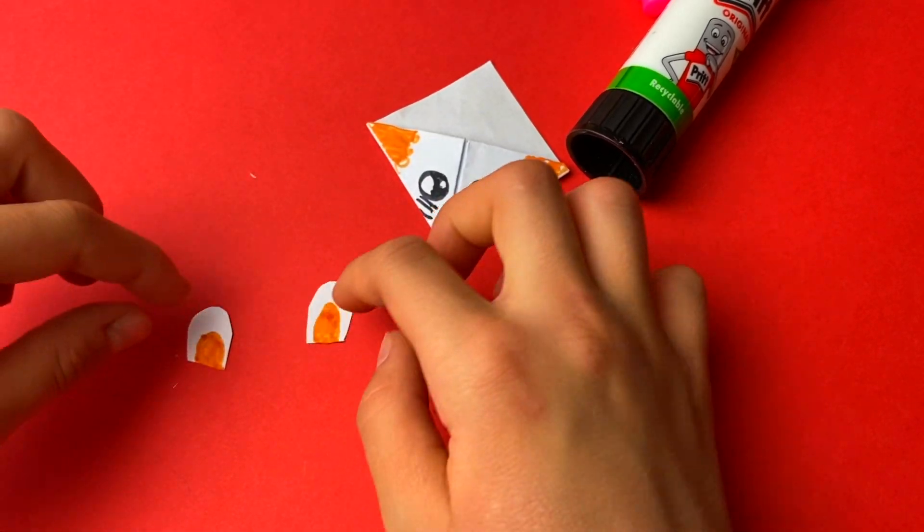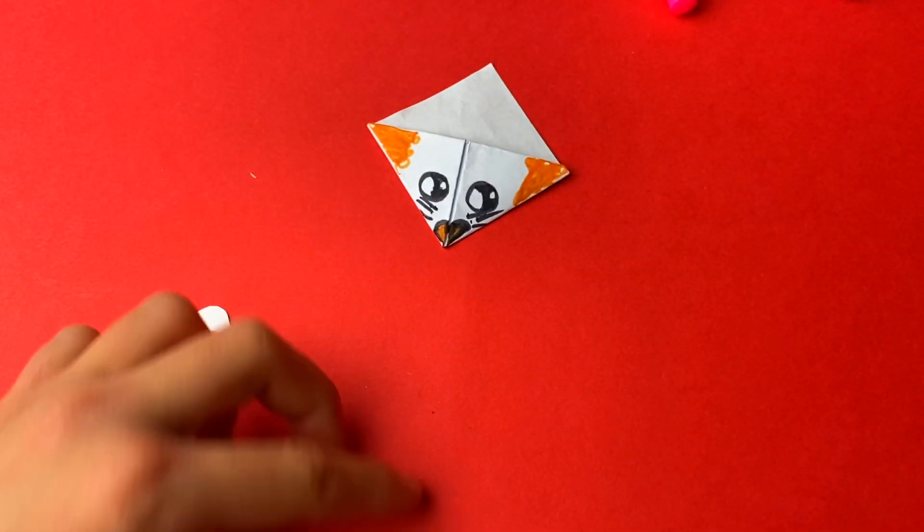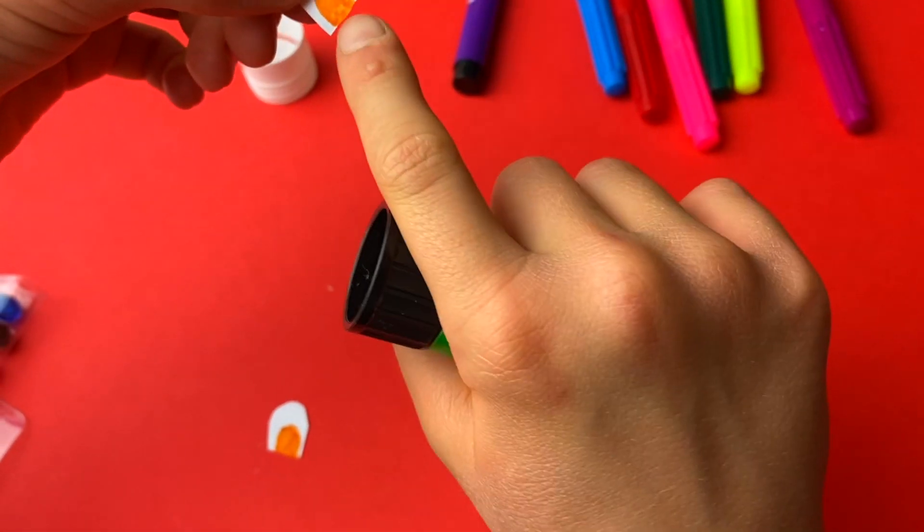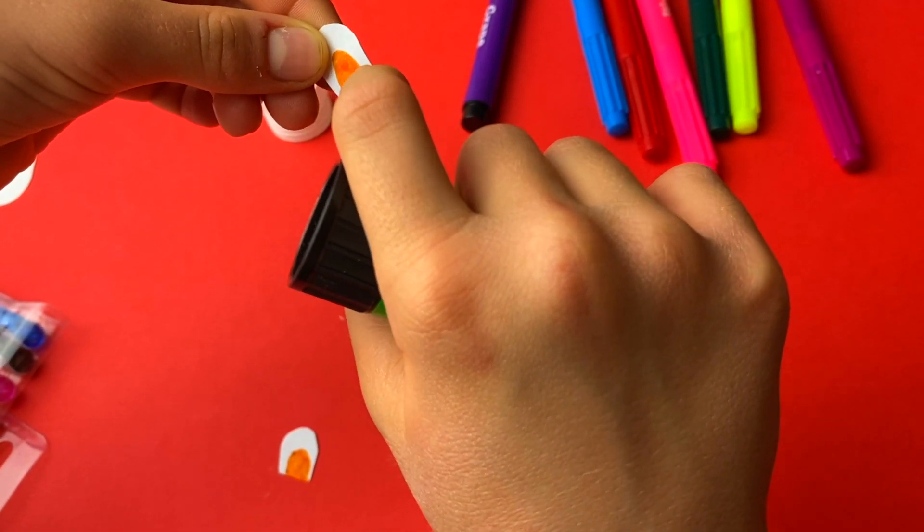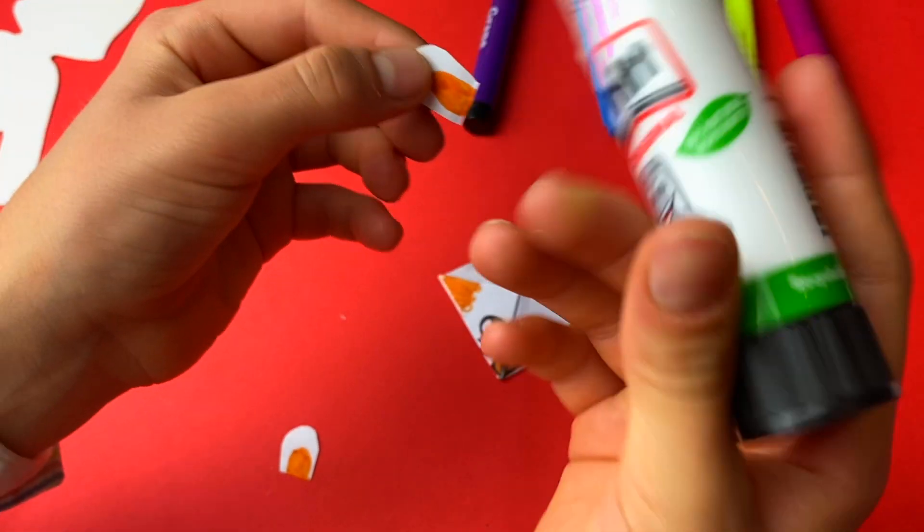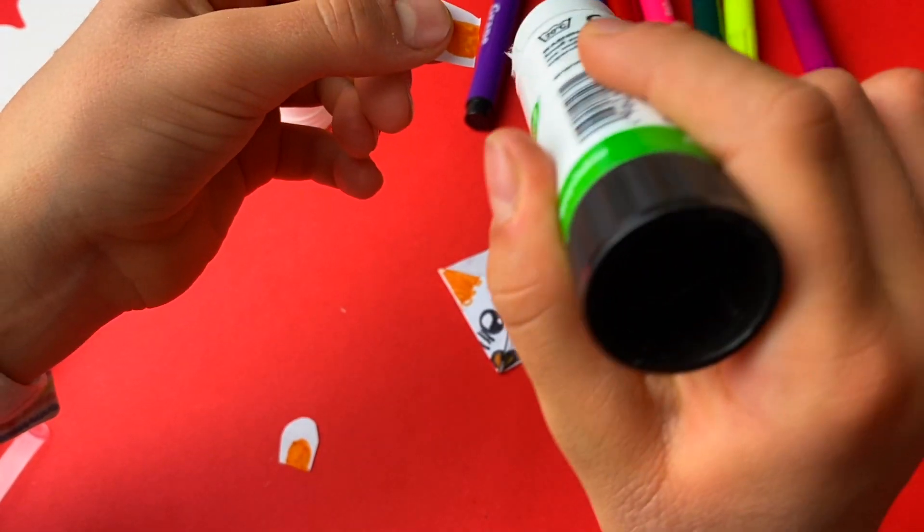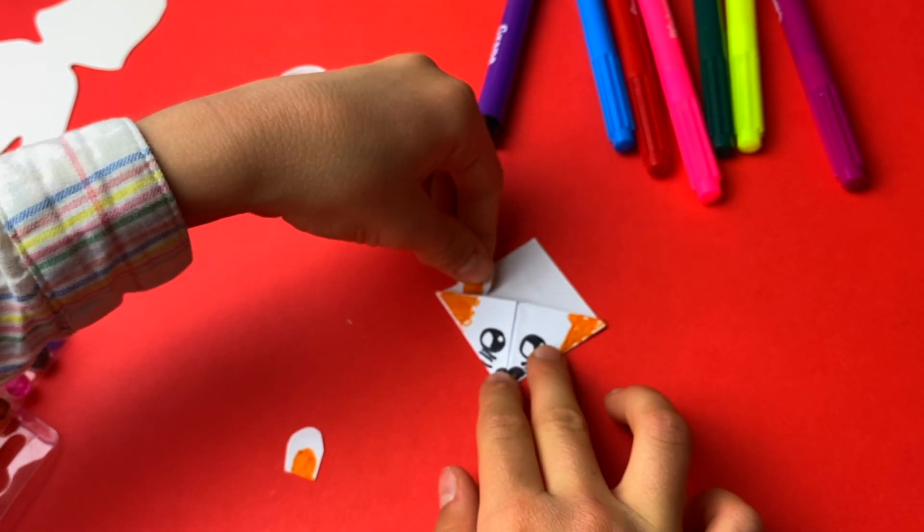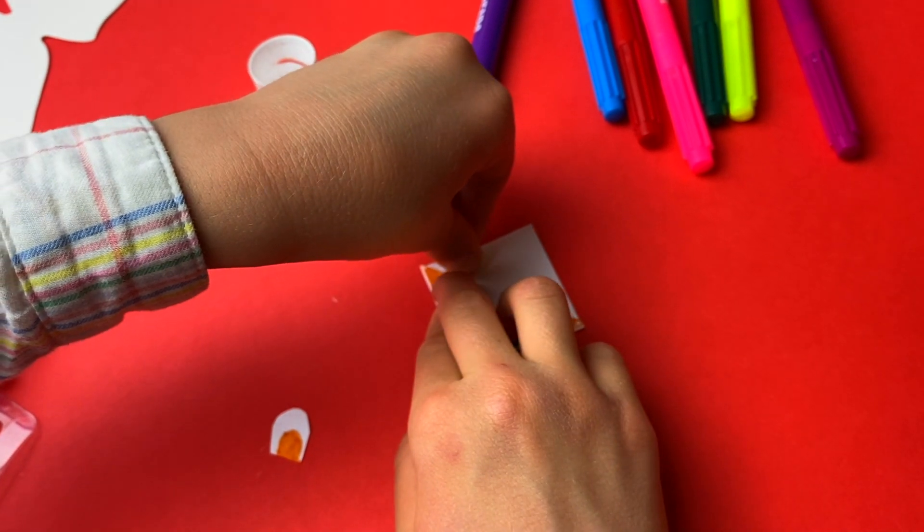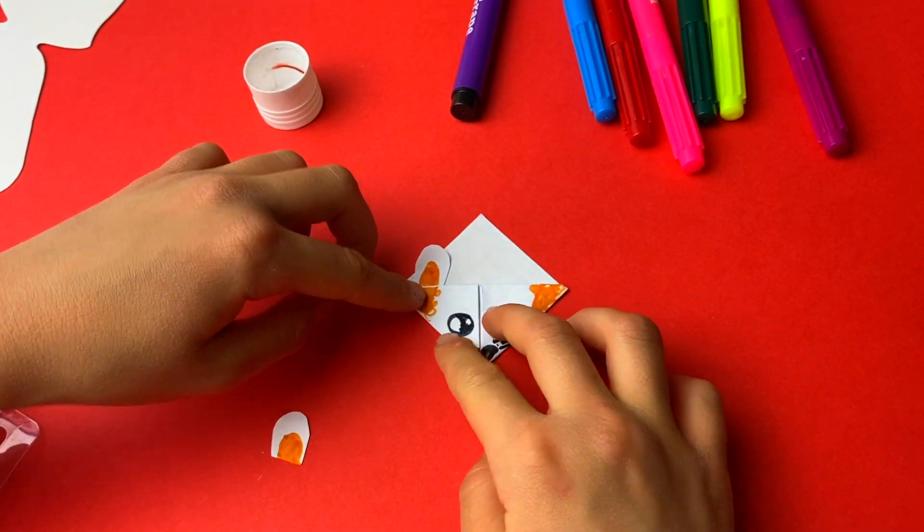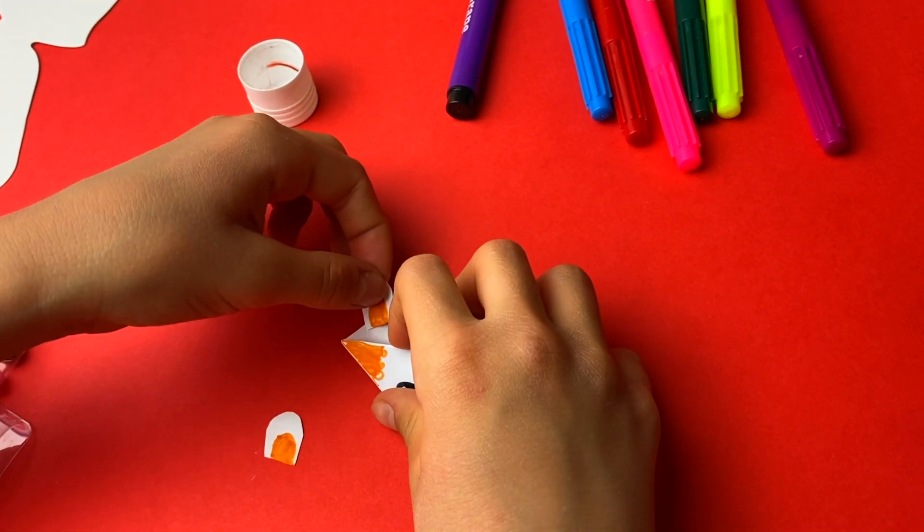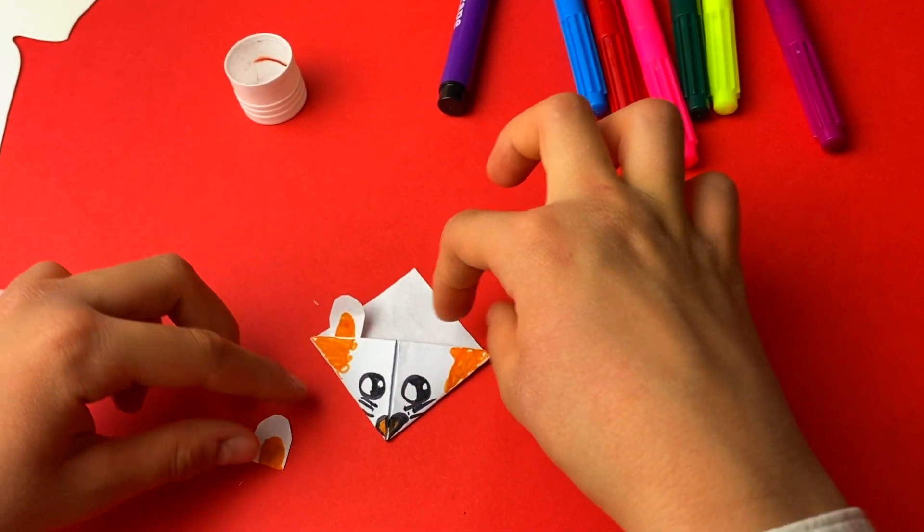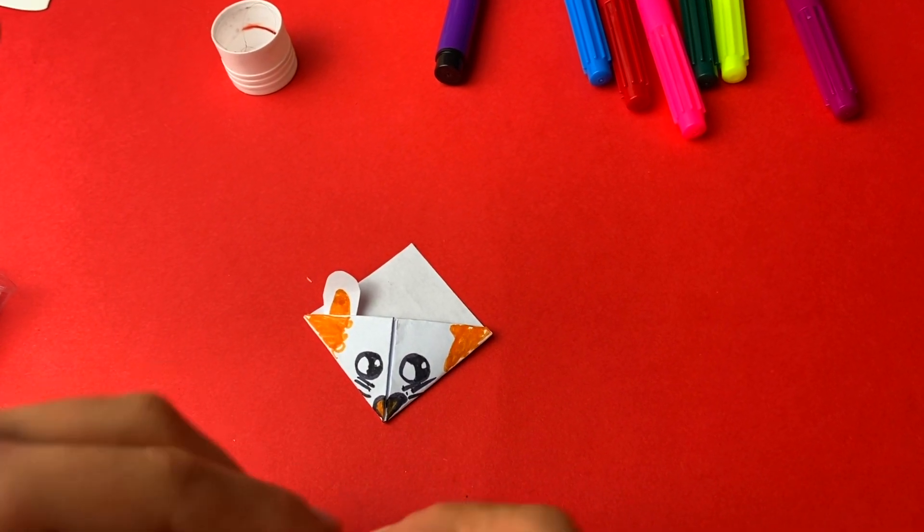There, and now we glue them in. So you get the side that you draw the smaller ear, you need to glue it in on the bottom a bit, and then you glue it in. Like this, and you do the same thing to the other side.